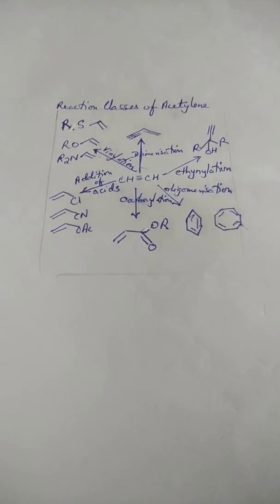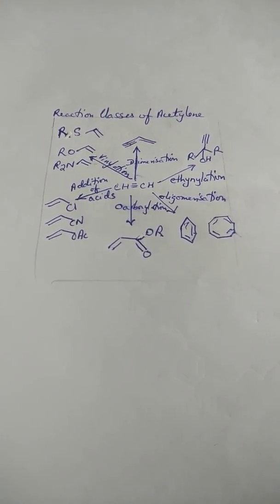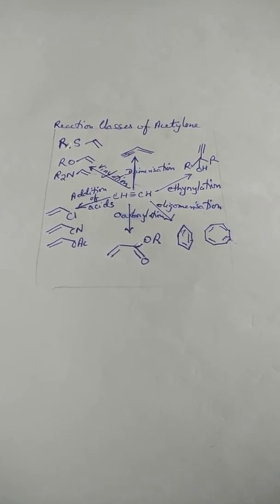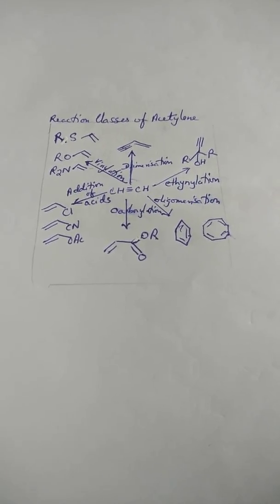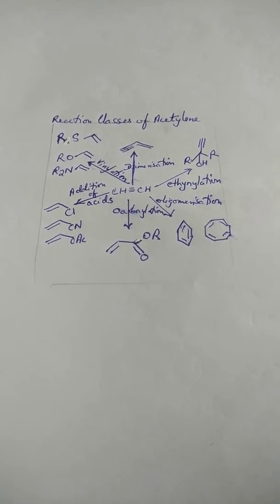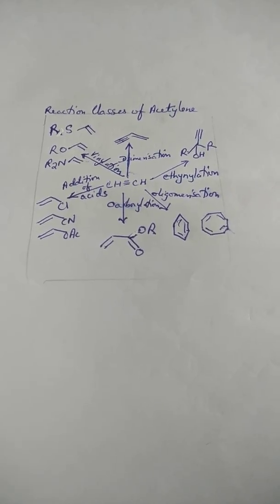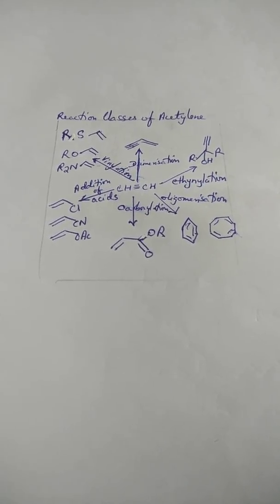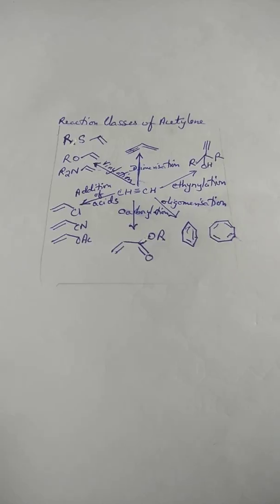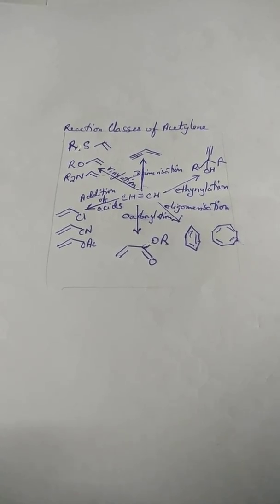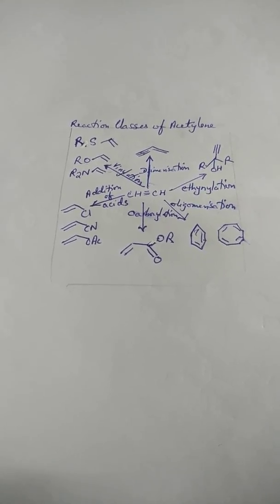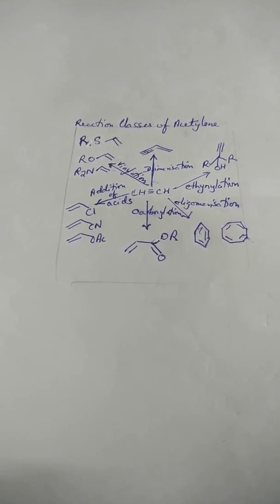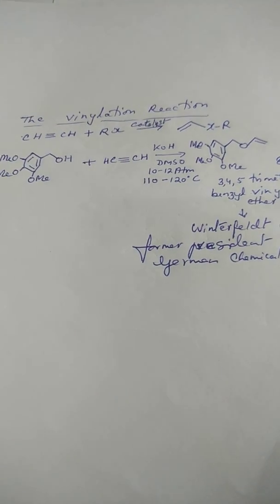What are these reaction classes? We'll take them up in a concise way. These include dimerization, vinylation, carbonylation, and ethynylation. All these reactions lead to important classes of compounds having diverse applications. Before moving to retrosynthesis, we'll deal with one or two important aspects just to highlight the significance of the use of acetylenes.